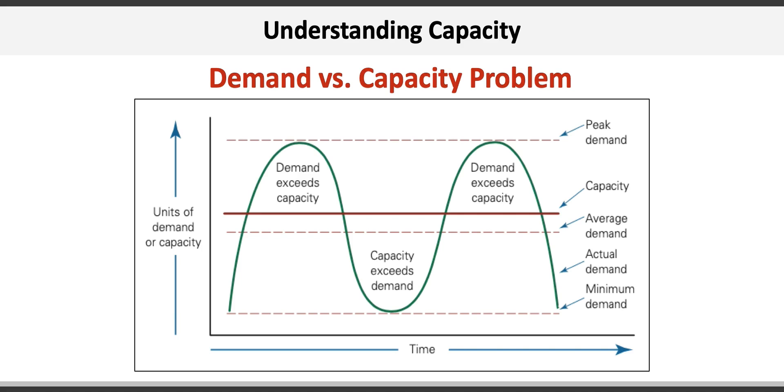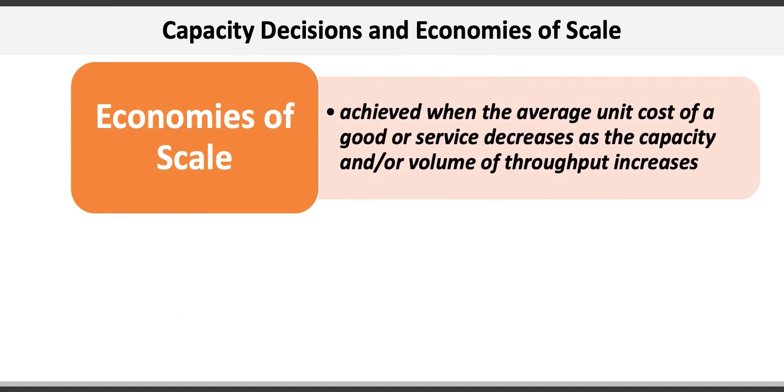Capacity decisions are often influenced by economies and diseconomies of scale. Economies of scale are achieved when the average unit cost of a good or service decreases as the capacity and or volume of throughput increases. For example, an oil refinery with a capacity of 300,000 barrels per day will have a lower production cost per barrel than a refinery with a capacity of 150,000 barrels per day.